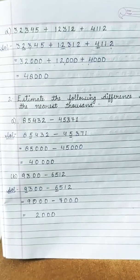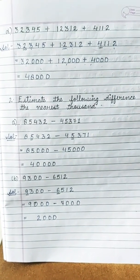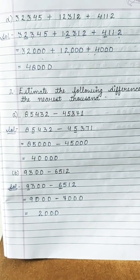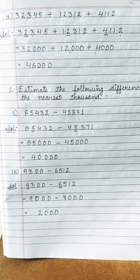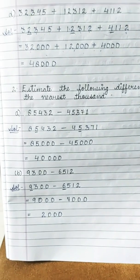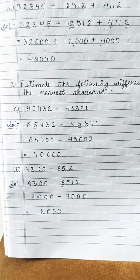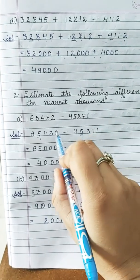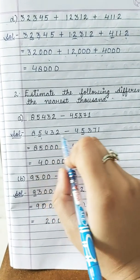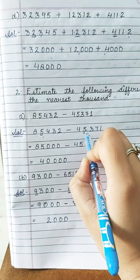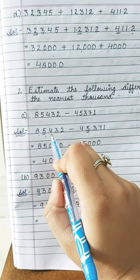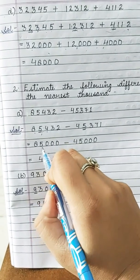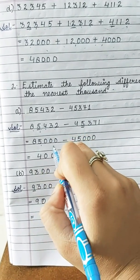Now the next question is: estimate the difference to the nearest thousand. Again we round off to the nearest thousand. Part A is 85432 minus 45371. Underline the digit at thousands place. I have underlined 5 in each number. For 85432, observe 4 — less than 5 — so 5 remains and 432 is replaced by 0, giving 85000.